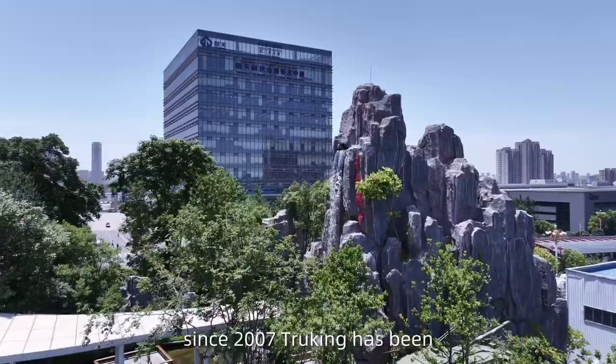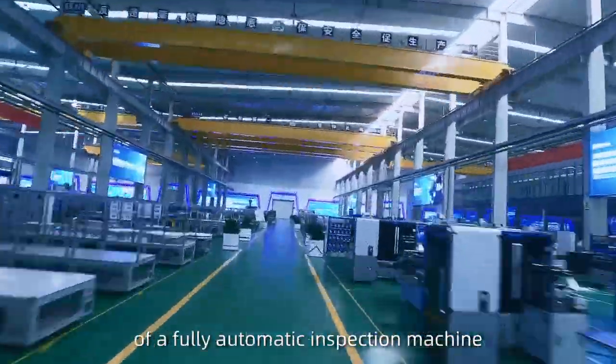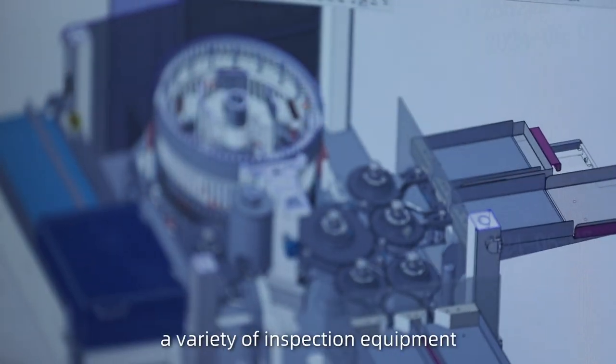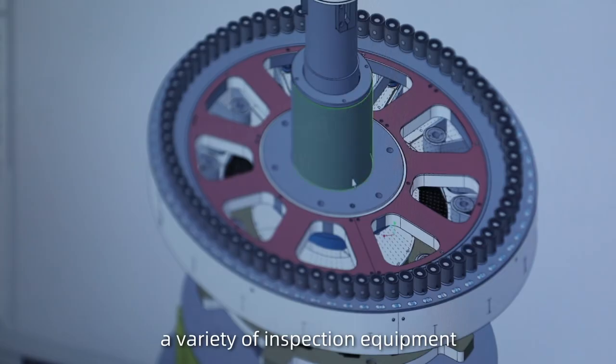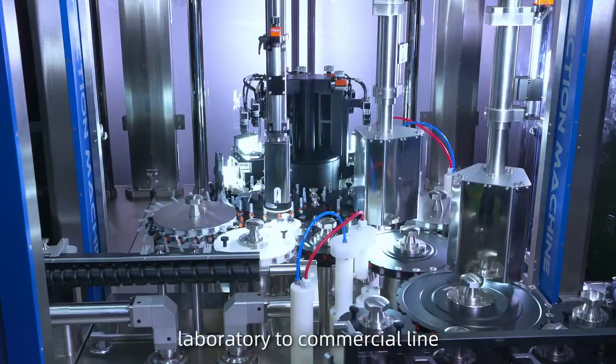Since 2007, Chukin has been engaged in the research and development of fully automatic inspection machines, and now we can provide a variety of inspection equipment covering the whole process from laboratory to commercial life.